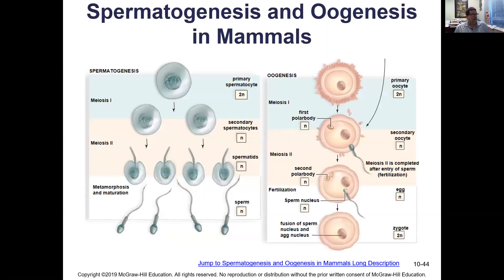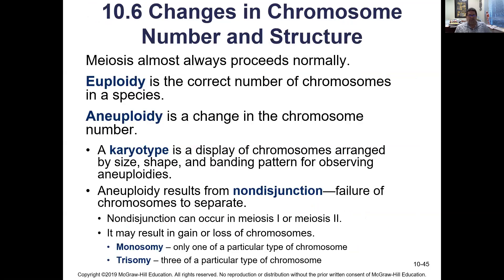In spermatogenesis in the testes, cytoplasm divides equally, producing four sperm. In female oogenesis, cytokinesis is uneven — one cell gets all the cytoplasm and the other forms a polar body. The second nuclear division doesn't occur until a sperm is trying to fertilize the egg, producing a second polar body. The resulting fertilized egg is 500-600 times bigger than a sperm. Polar bodies found in women prove they are genetically female.